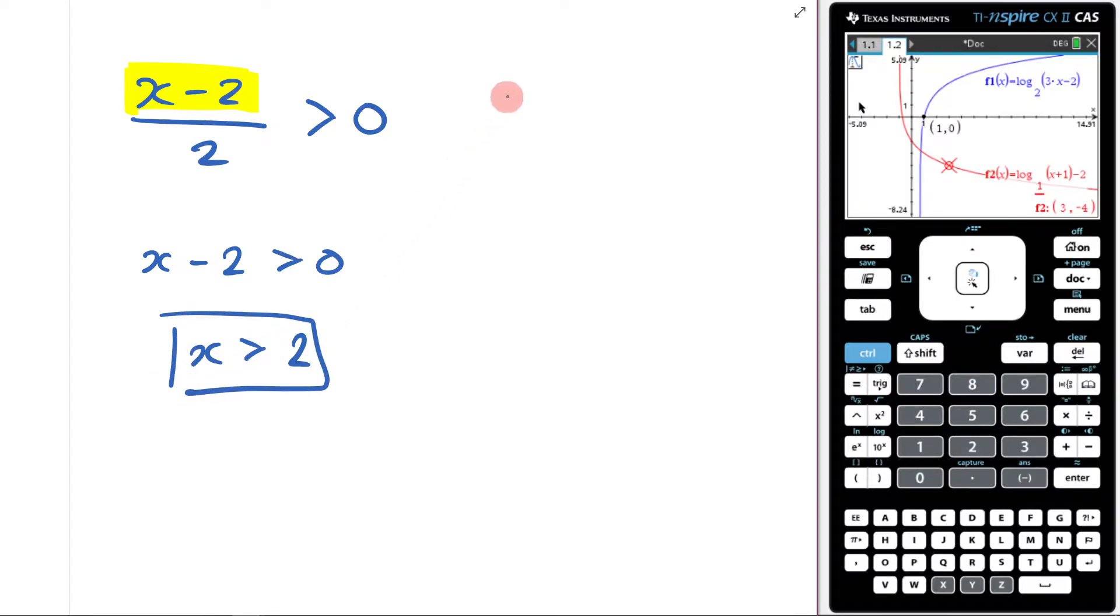The other way of doing it would just be going, alright, this is the same as x minus 2 minus 2 over 2, which is the same as 1, and then you can rearrange it.